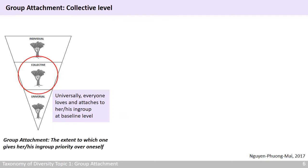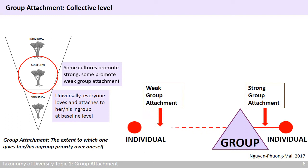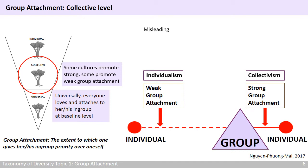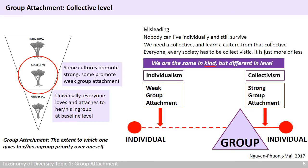At the collective level, we see a divergence. If the triangle represents the group and the red dot represents an individual, then above the baseline level, some cultures promote strong and some promote weak group attachment. Strong group attachment is called collectivism, and weak group attachment is called individualism. However, from an evolutionary point of view, individualism can be a bit misleading. Nobody can live individually and still survive — we need a collective and learn a culture from that collective. Everyone and every society has to be collectivistic; it is just more or less. We are the same in kind, but different in level. That's why for this course, I have formulated a new terminology: weak and strong group attachment.